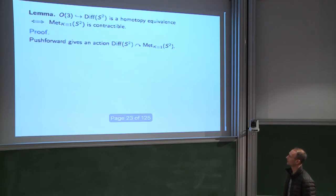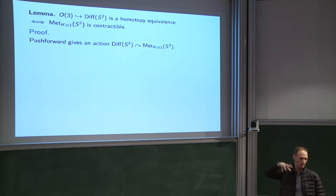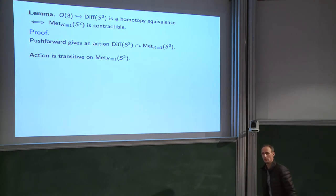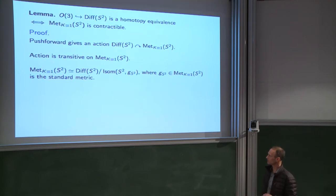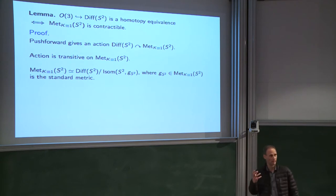Let's look at the diffeomorphism group of S². This acts on the space of curvature-1 metrics by pushforward — if you're given a metric with curvature 1 and a diffeomorphism, you push forward that metric and get another metric with curvature 1. This is a transitive action: if you have two metrics with curvature 1 on the 2-sphere, they're isometric to one another. So we can think of this space of metrics as a coset space of the group acting, modulo the stabilizer of our favorite element — say the standard metric on S², whose isometry group is just O(3).